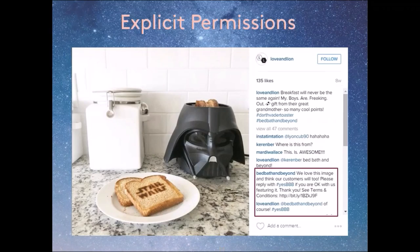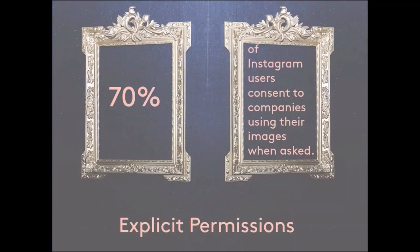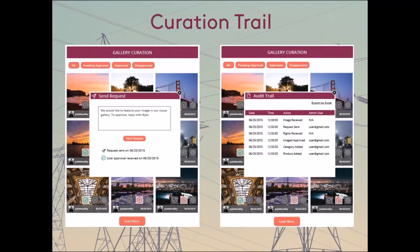In contrast, explicit permissions consist of outright asking a user if he or she agrees to your company reusing a photo. The request appears as a comment on the photo asking the user to comment back with some iteration of hashtag yes-brand. And 70% of the time, users will agree to companies reusing their photos. When they do, the photos can be reused in email marketing, ads, and any number of channels. This can be done with one click in a visual commerce dashboard, which will also have the history of rights requests and permissions documented.